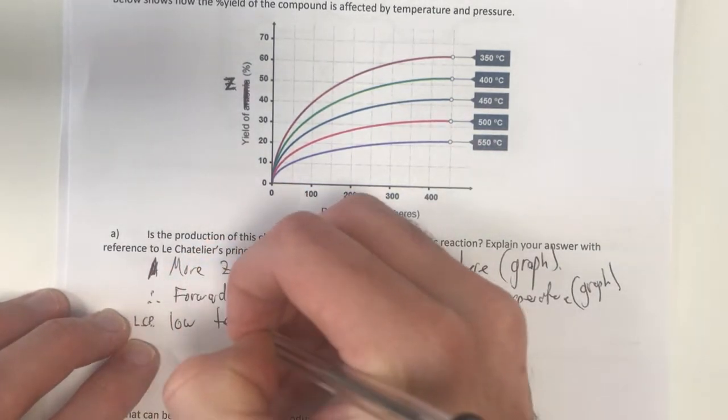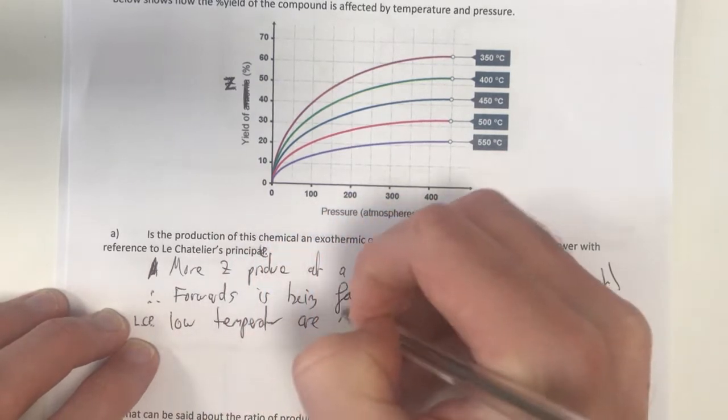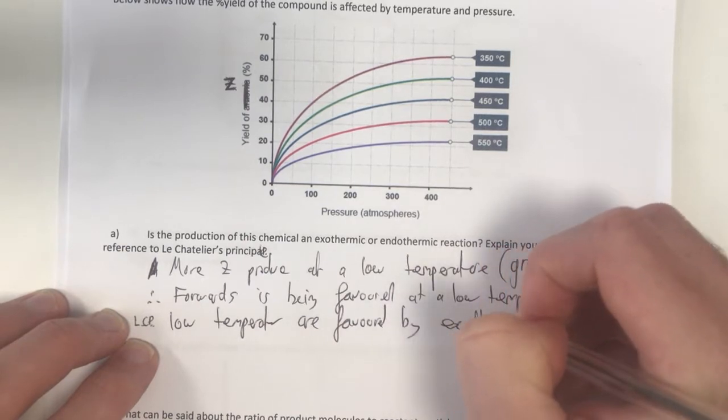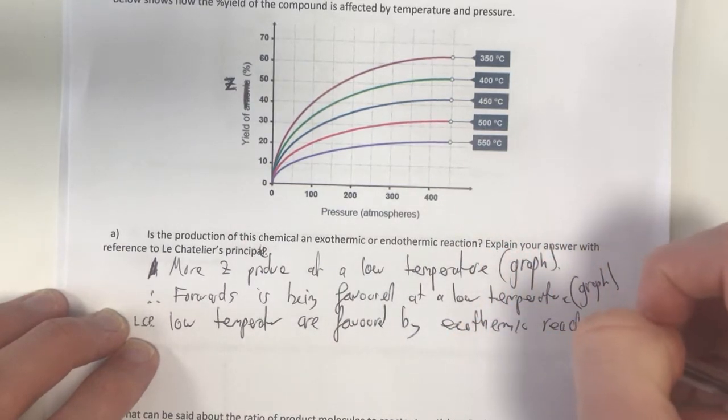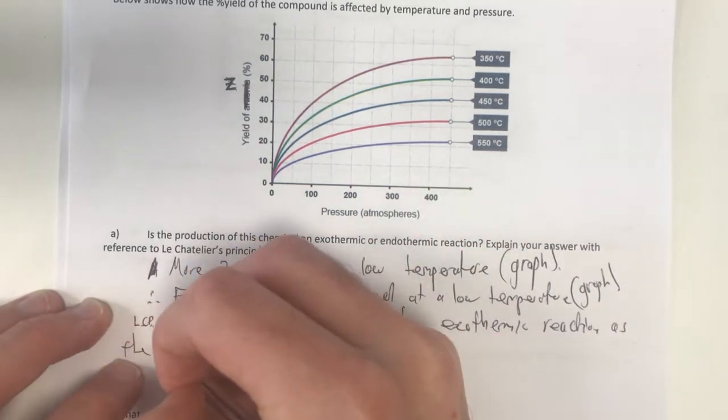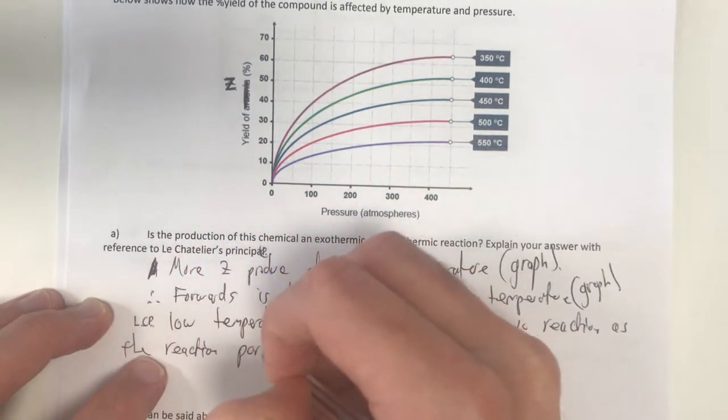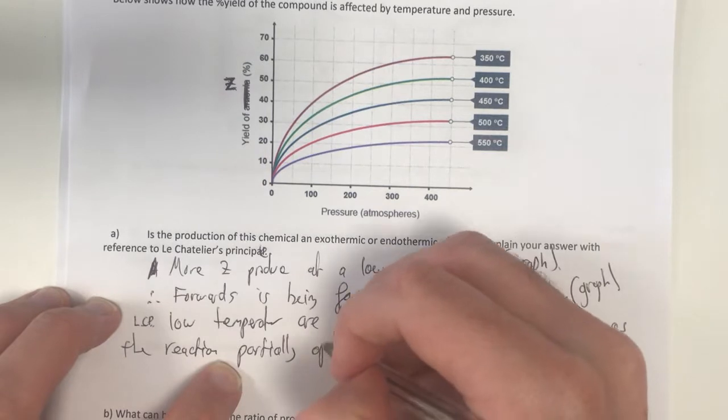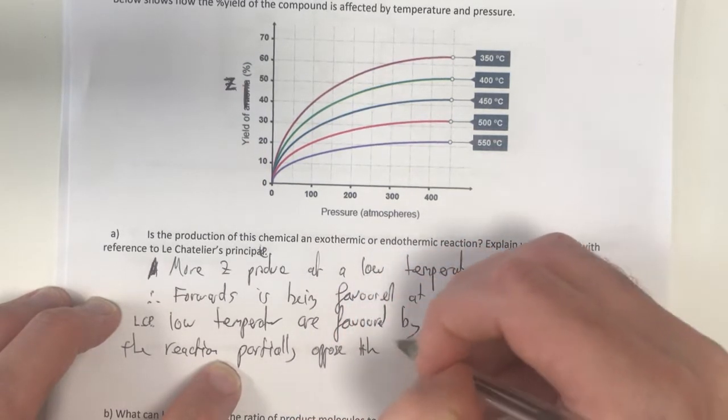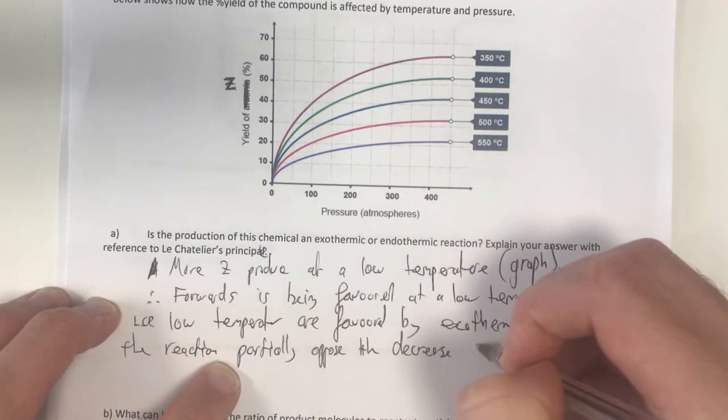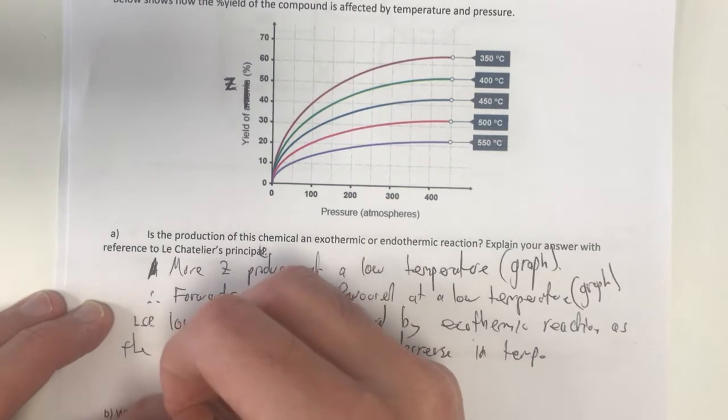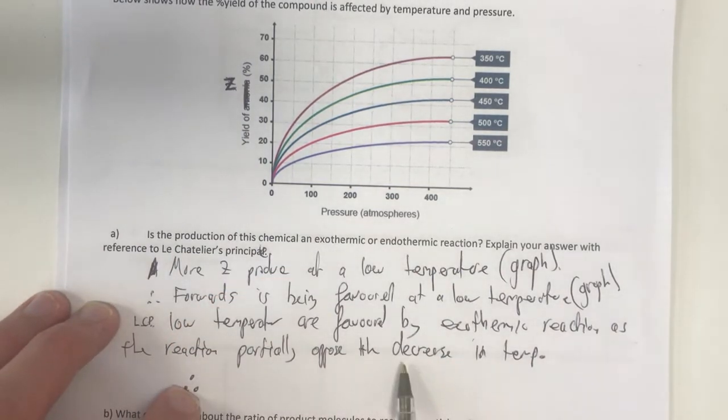Now Le Chatelier's principle suggests that what is favoured at a low temperature? So low temperatures are favoured by exothermic reactions as the reaction partially, this idea of partially opposition is what we talk about with Le Chatelier's principle, partially opposes the decrease in temp.